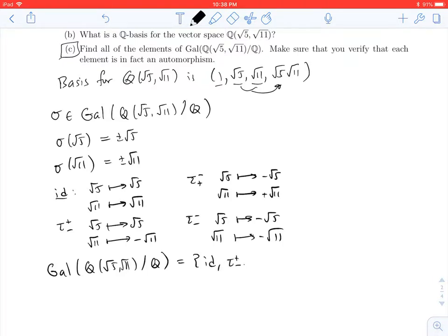The identity (we could have called it tau plus plus), tau plus minus, tau minus plus, and tau minus minus.